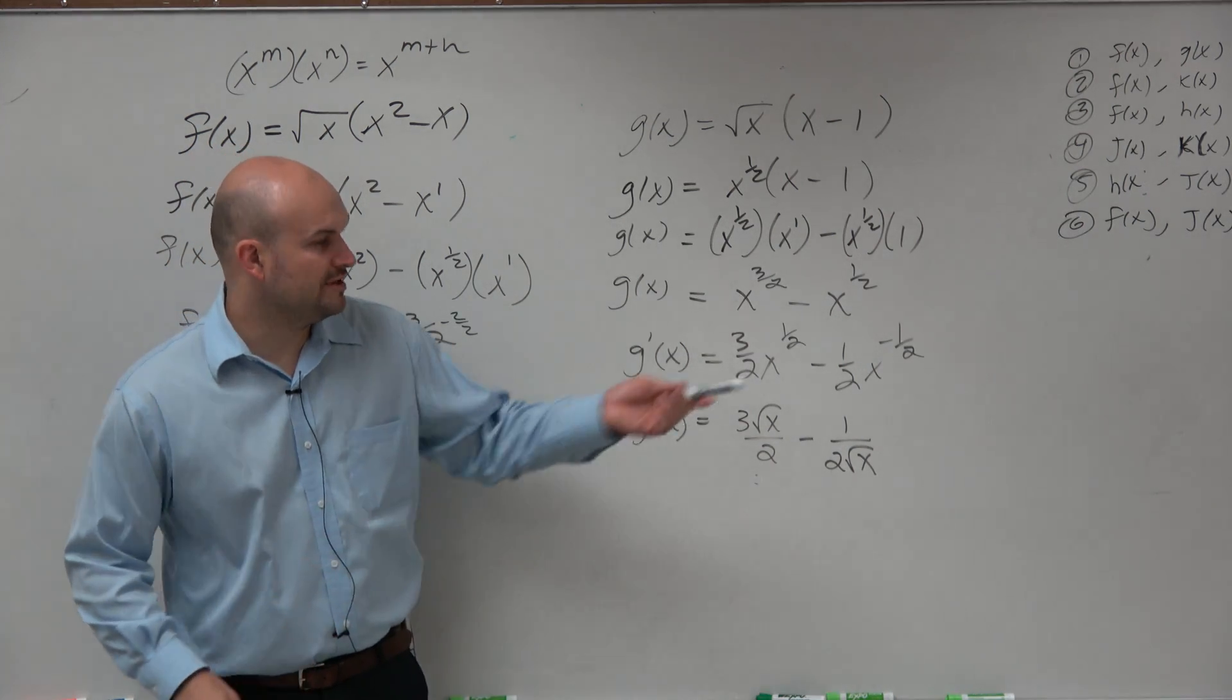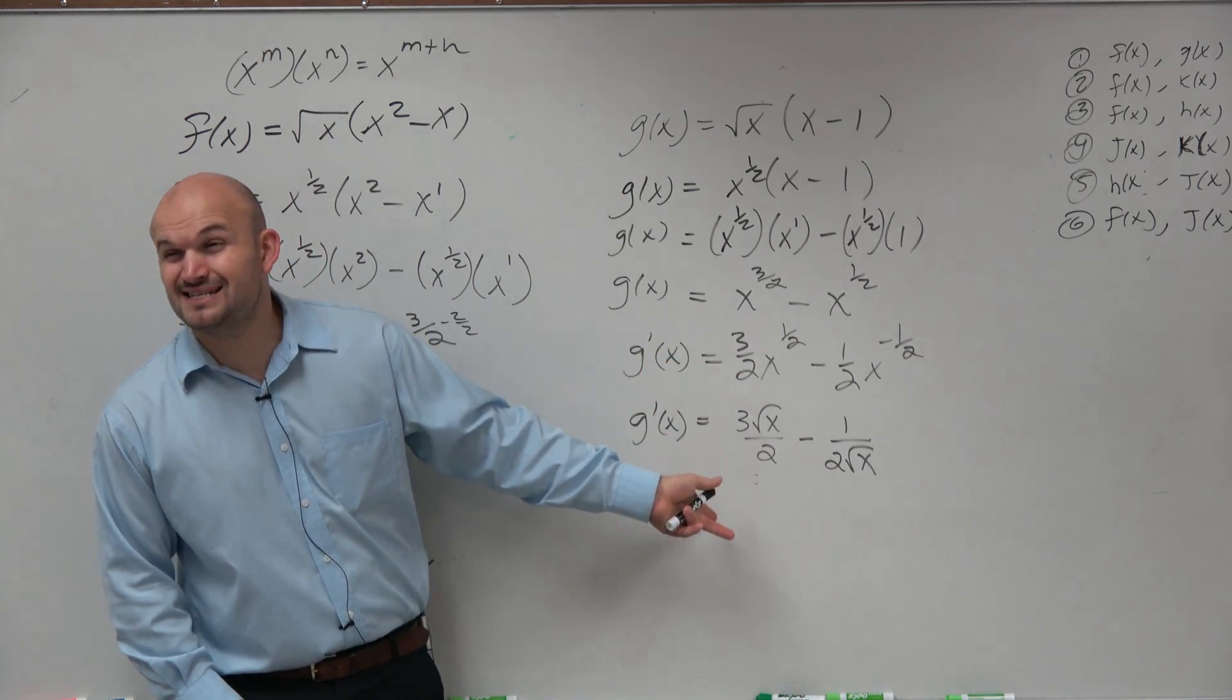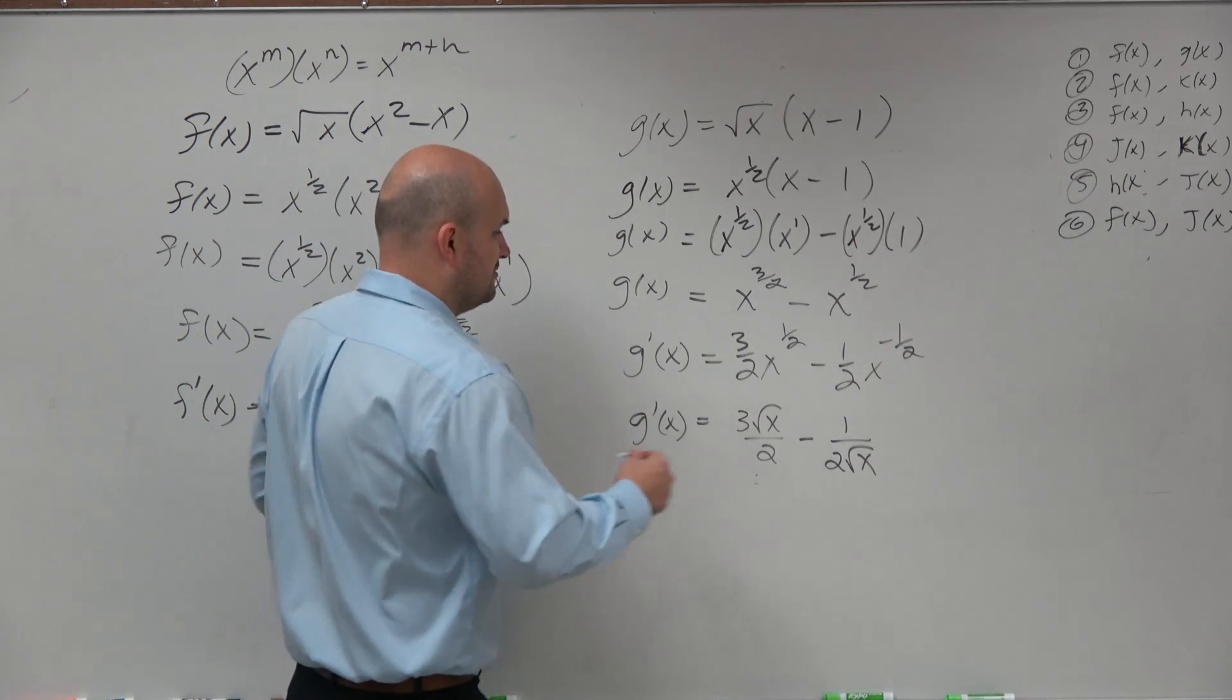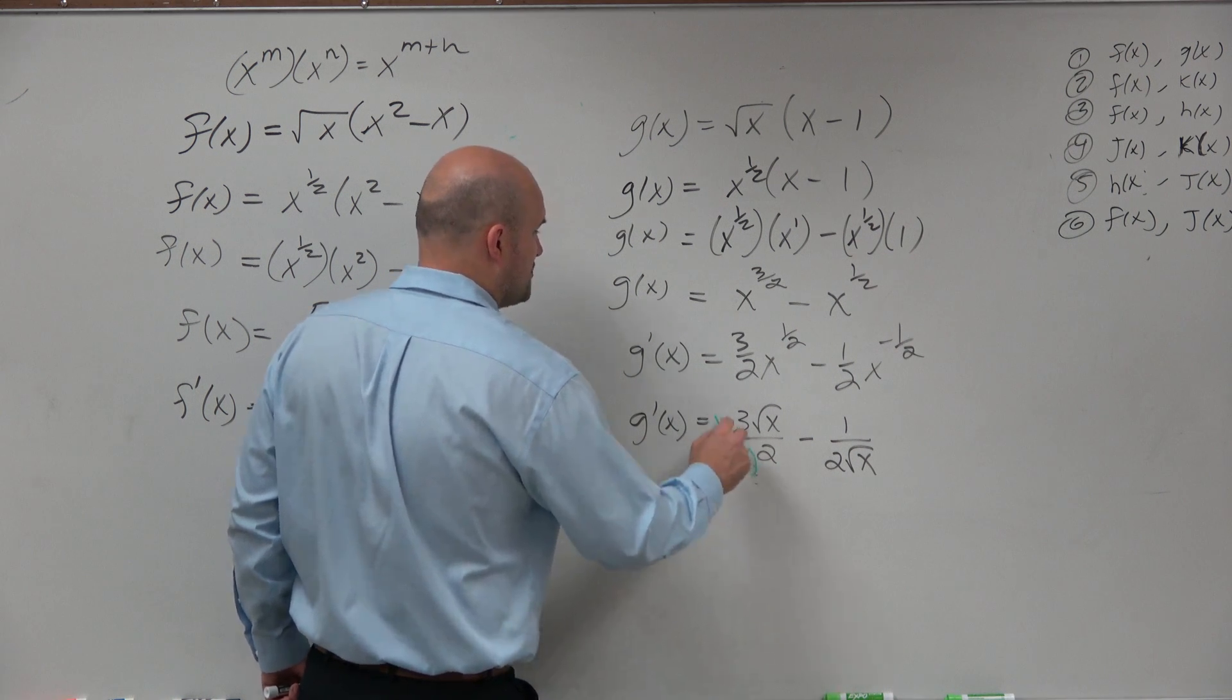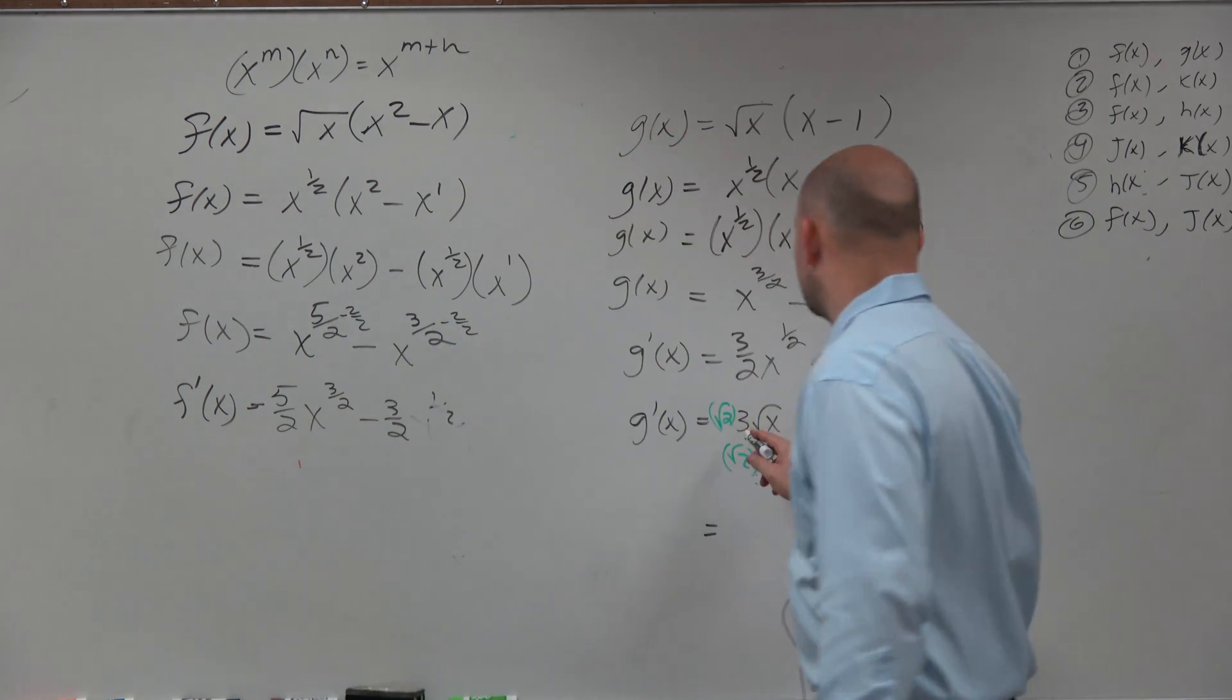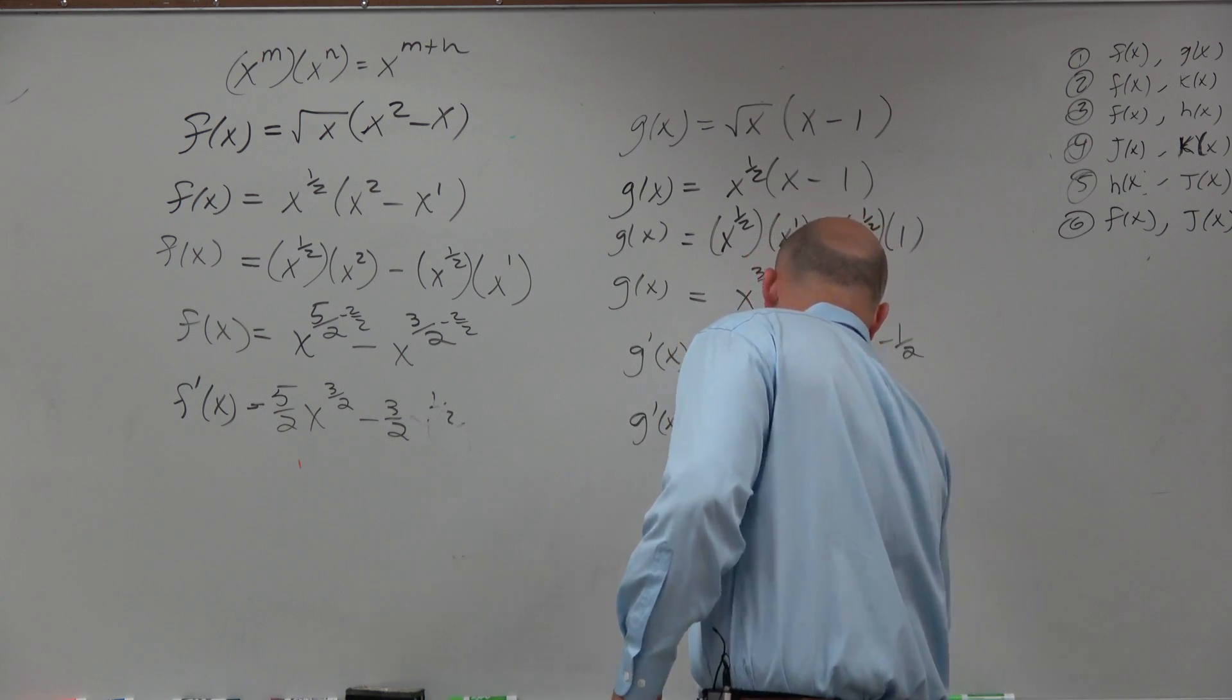So what I did is I rewrote them as square roots instead of 1/2 power. And you're not going to see that as an answer either. What you're going to see is combining common denominators. So to get common denominators, you'd have to multiply by the square root of 2 over the square root of 2. And then the answer you would see on a multiple choice test is going to be 3 square root of 2x minus 1 all over.